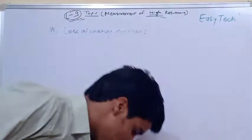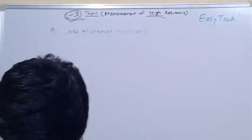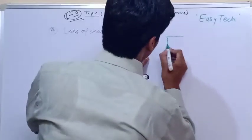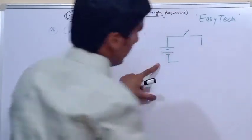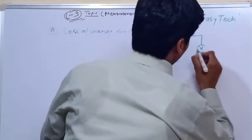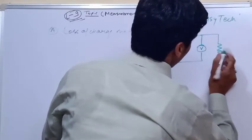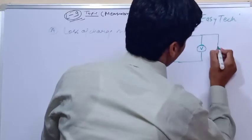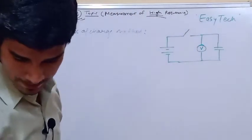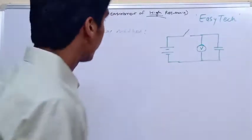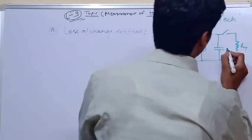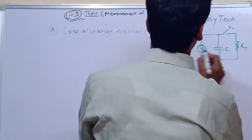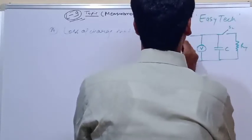The loss of charge method includes a systematic diagram. The circuit contains an electrostatic voltmeter, a voltage supply, switch S1, switch S2, a capacitor C, and the unknown resistance R whose value is to be found out.